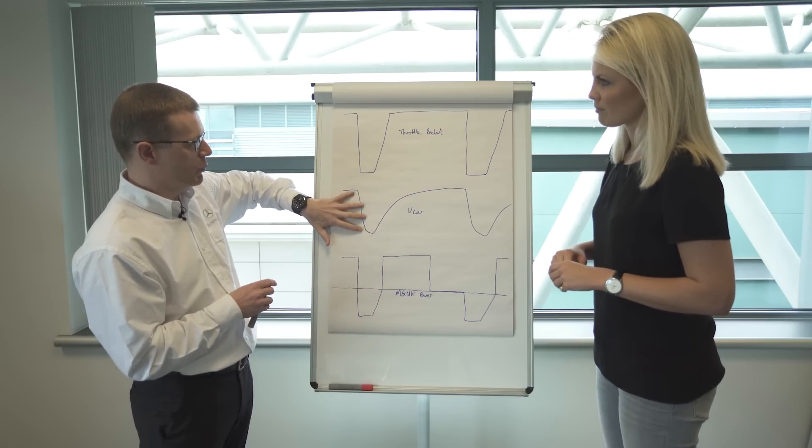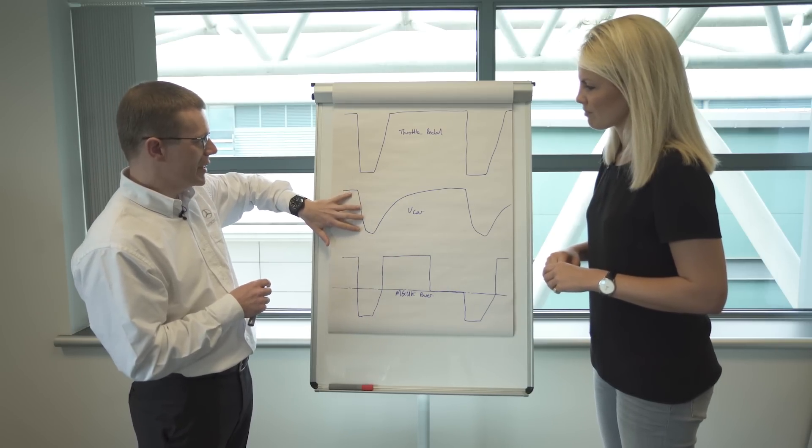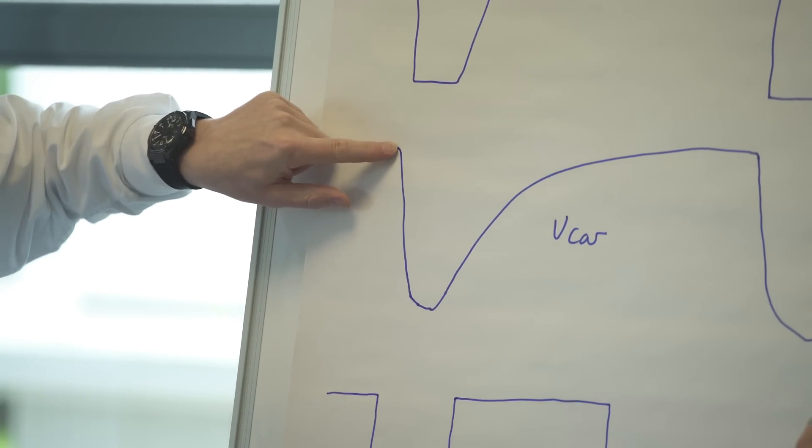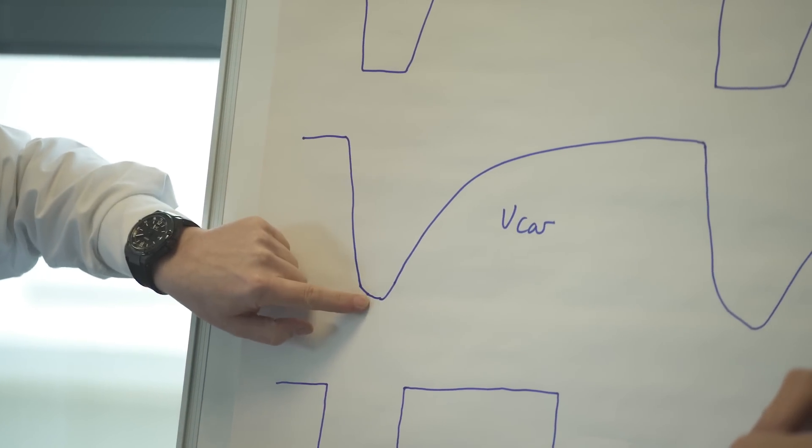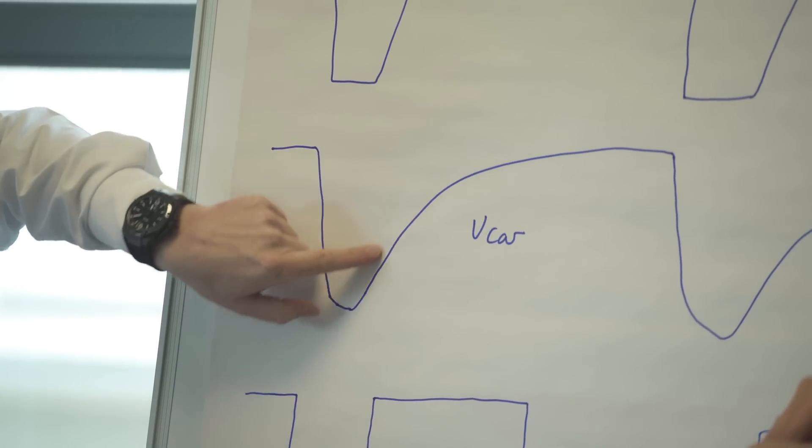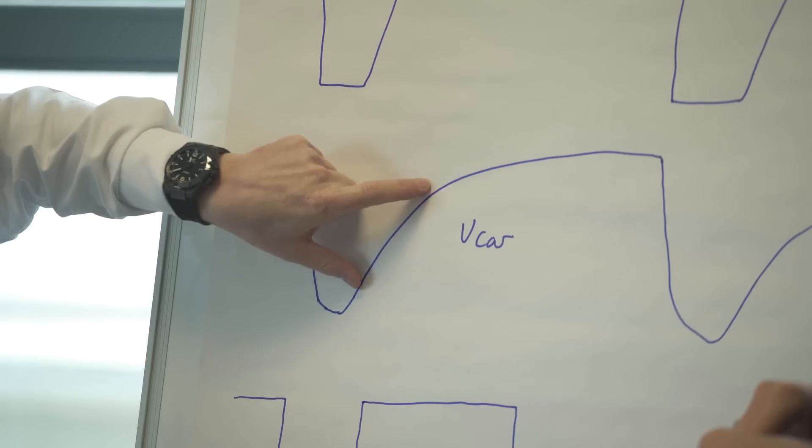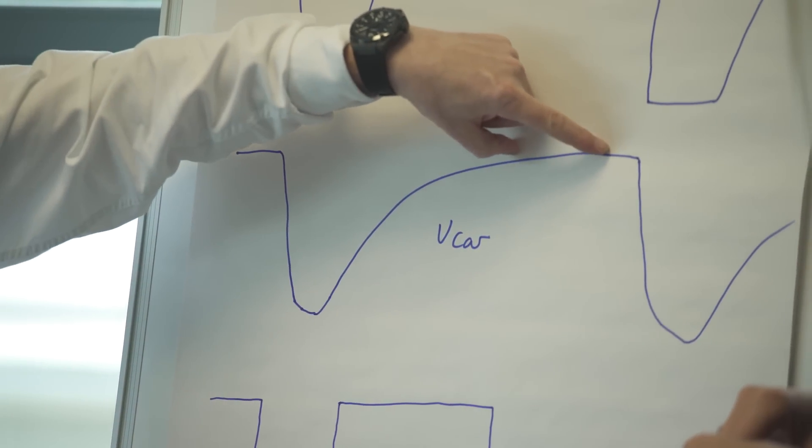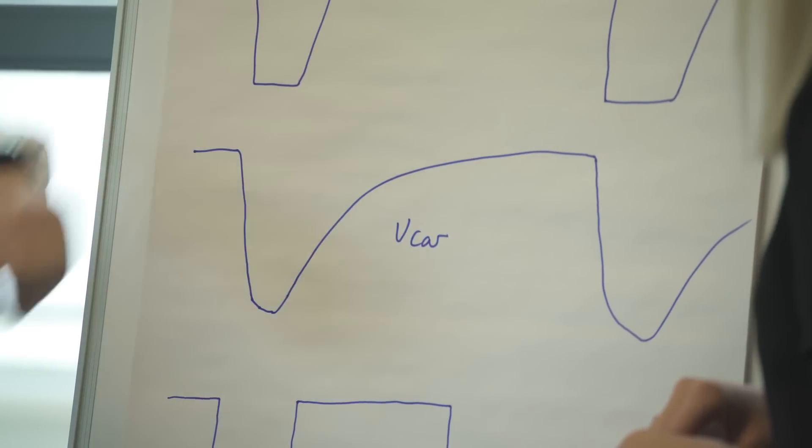Now this trace is the car velocity, V car. So it's going quick, comes off the pedal, car slows down, gets enough grip, and then the car accelerates out. The velocity increases, the gradient's steeper to start off with, and then it tails off as the aerodynamic forces balance out with the propulsion.